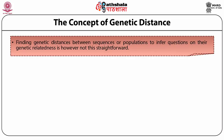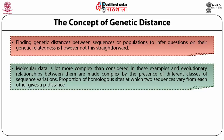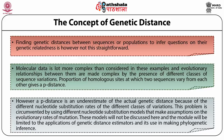Finding genetic distances between sequences or populations is not entirely straightforward. Molecular data is far more complex than considered in simple examples, and evolutionary relationships are made complex by the presence of different classes of sequence variations. The proportion of homologous sites at which two sequences differ gives a p-distance. However, p-distance is an underestimate of the actual genetic distance because of different nucleotide substitution rates of different classes of variation. This problem is circumvented by using nucleotide substitution models that make assumptions on the evolutionary rates of mutation.